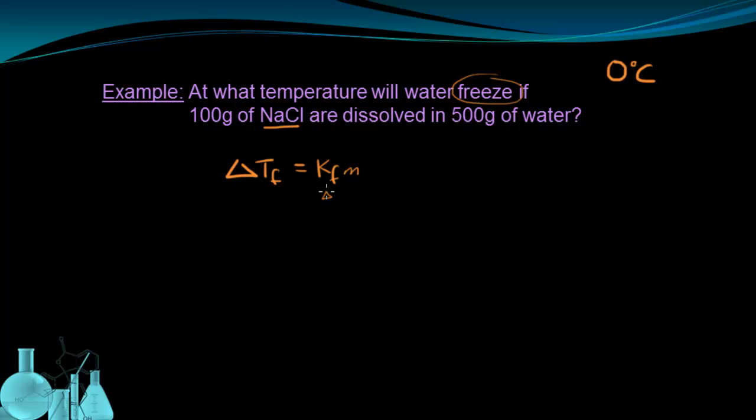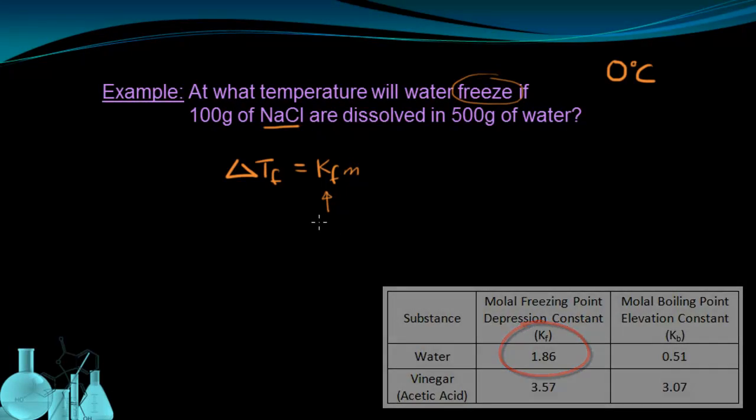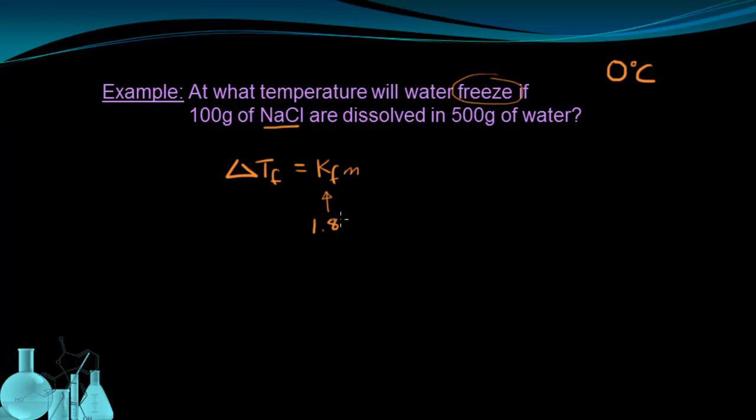Let's see if I can start figuring some of this stuff out. Well, I know Kf because Kf is just from this table. Again, here's a table with water and vinegar. I want the Kf for water. So that's going to be 1.86 degrees Celsius per molal. And now I need to know the molality to continue with this equation because I'm looking for this part. I'm looking for the change in freezing point temperature.